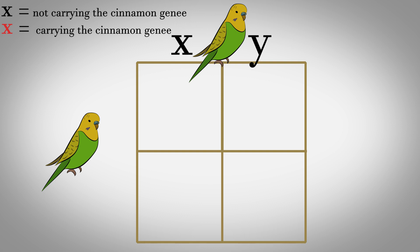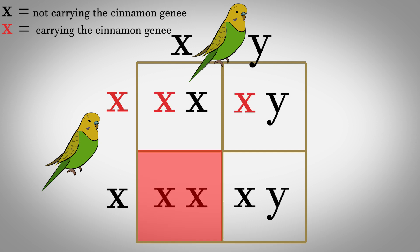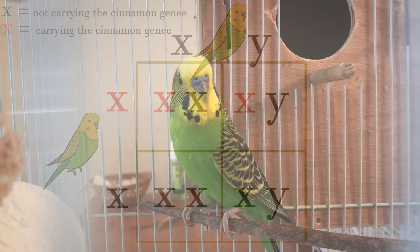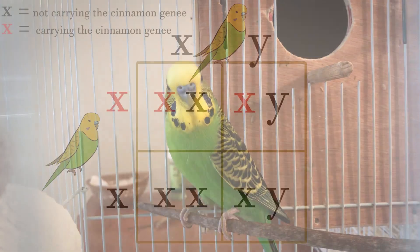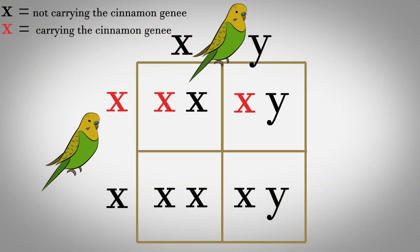Let's take a normal female — meaning she is not cinnamon — because with X-linked mutations, females are either cinnamon or not; they cannot be carriers. And let's take the male as a carrier for the cinnamon gene. In this case, 25% of the offspring are normal males, 25% are normal females, 25% are male carriers — meaning they appear as normal budgies but are carrying the hidden cinnamon gene — and finally, 25% will be cinnamon females.